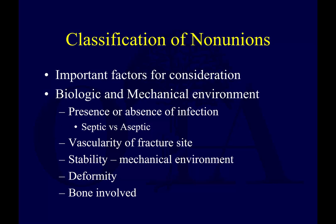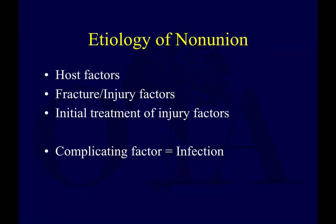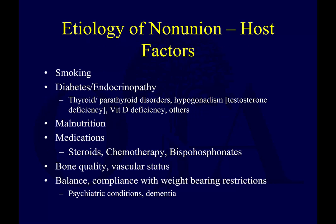You need to understand these terms — they are important factors to consider. You also need to think about the biologic and mechanical environment, the presence or absence of infection, the vascularity of the fracture site, the mechanical environment and stability, presence of deformity, and which bone is involved. There are host factors, injury factors, and factors related to how the patient was initially treated that may be playing a role in the non-union, as well as complicating factors like infection.